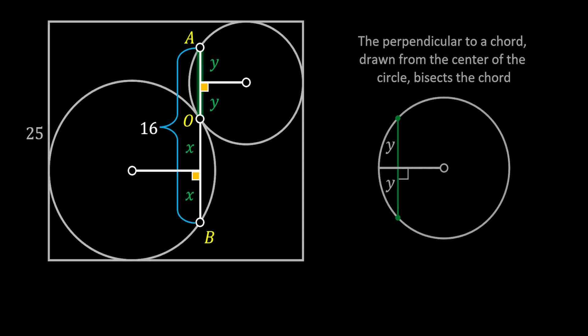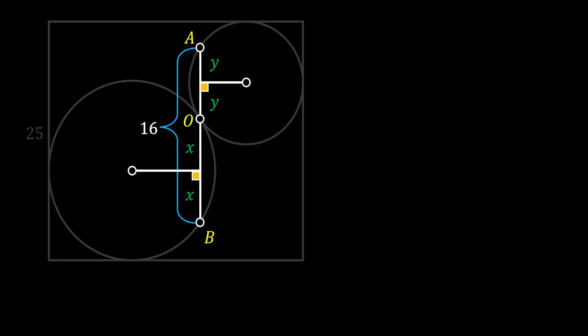Now, if we clear our image a little bit, you can see that the segments BO plus OA will get us to the line AB. So, if we substitute our values, we get that 2X plus 2Y is equal to 16. Now, we can simplify both sides of the equation with 2 and get that X plus Y has the length of 8.